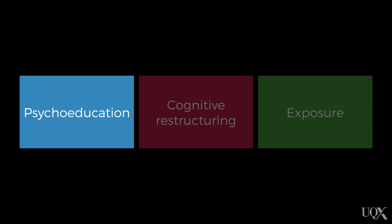Psychoeducation involves educating clients about anxiety. This would include talking about the fact that anxiety is normal, that it is often adaptive or helpful, and that we understand it to consist of three separate but interrelated systems: the cognitive, behavioural, and physiological systems. I would usually go through a cognitive behavioural model such as the one we looked at before.